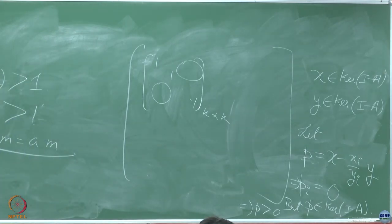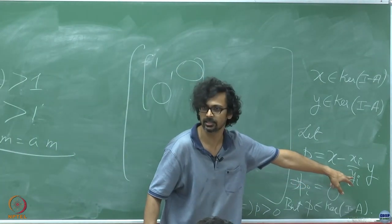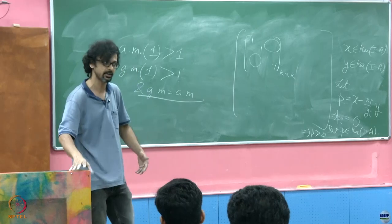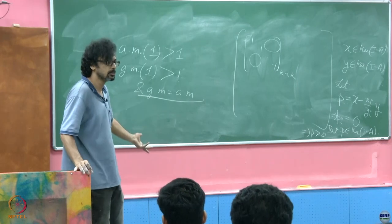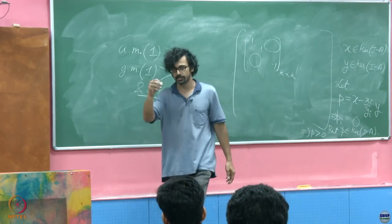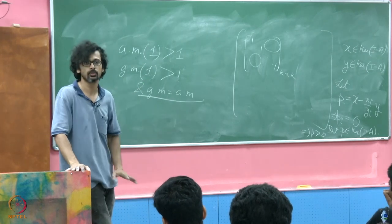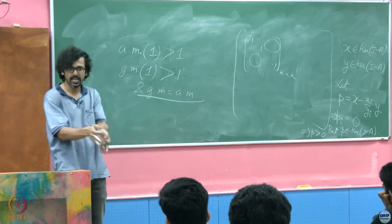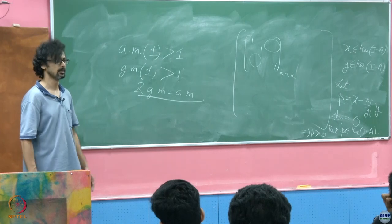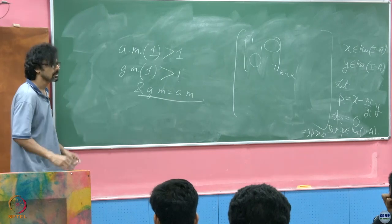So you cannot have diagonalizability either. Either way — if you have multiple eigenvalues with a proper block diagonal form, this contradicts positivity of the eigenvector; or if it is a Jordan form it blows up along the eigenvector direction. Both are impossible. Therefore not only do you have exactly one eigenvalue equal to the spectral radius, but its algebraic multiplicity is exactly 1. It's a unique fellow with no parallel.